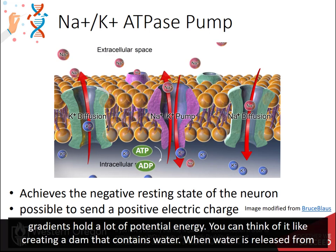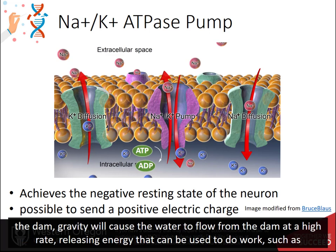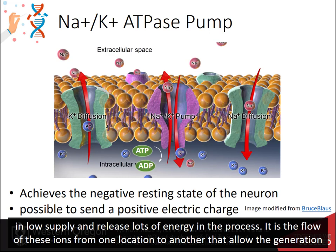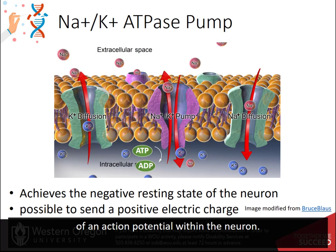Gradients hold a lot of potential energy. You can think of it like creating a dam that contains water. When water is released from the dam, gravity will cause the water to flow at a high rate, releasing energy that can be used to do work, such as generating electricity. Similarly, when a concentration gradient of ions is released, it will flow down its concentration gradient to areas in low supply and release lots of energy in the process. It's this flow of ions from one location to another that allows the generation of an action potential within the neuron.